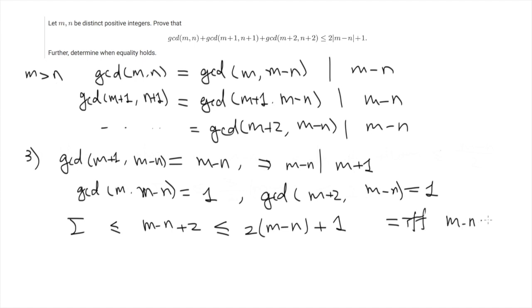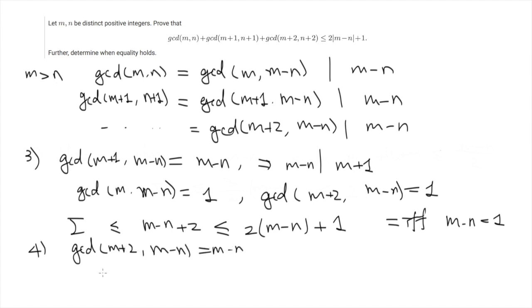Now we only have one case left, which is the third term equals m minus n. We remark that using the same argument, this is exactly the same as the first case. So basically we are done.